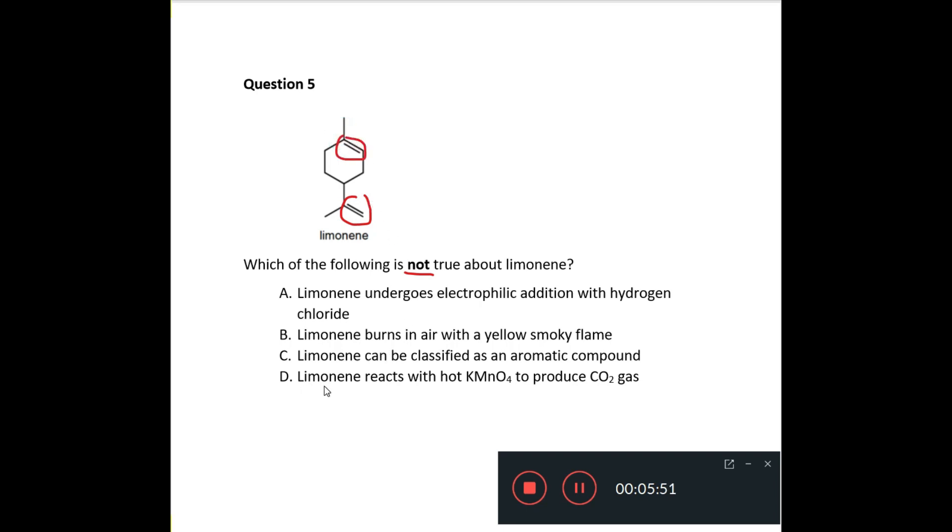And D says limonene reacts with KMNO4 to produce CO2 gas. Well, does it have a CH2 about the double bond? And the answer is yes. That bond, when it splits with hot KMNO4, will produce CO2 because there's a CH2 right here at the end. C is the answer. It says limonene can be classified as an aromatic compound. And that's not true. It does not have a benzene ring. It has a six-membered ring, but it's not benzene. It's a cyclohexene ring.